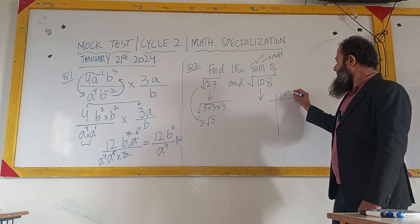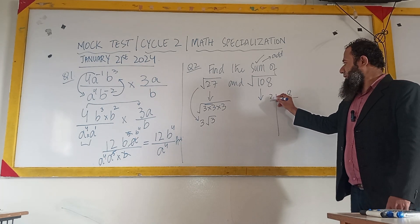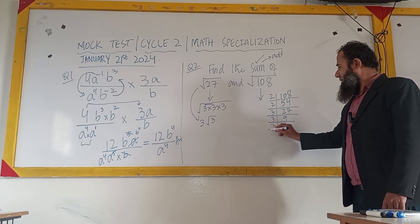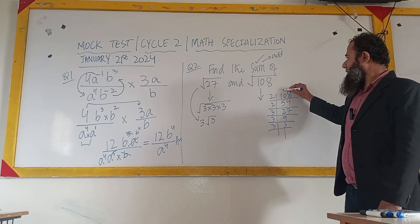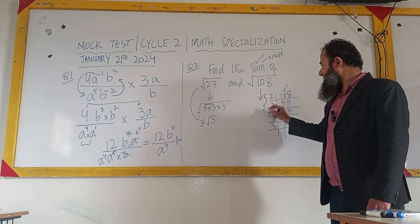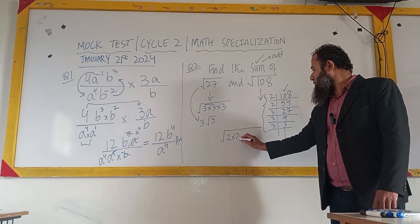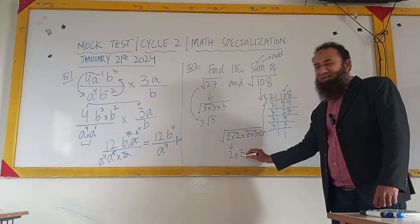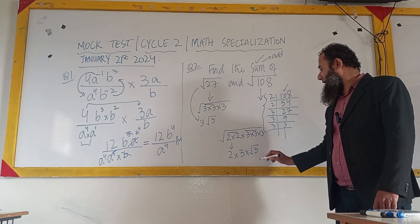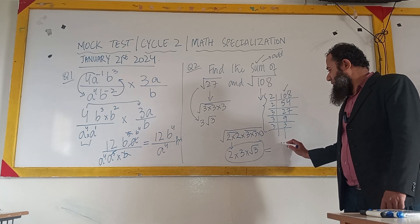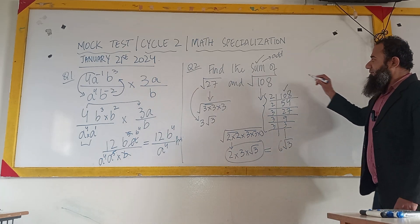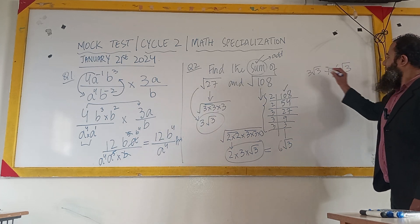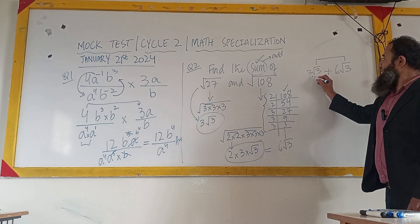We do the same for 108 using prime factorization: 2 times 2 times 3 times 3 times 3. Written in radical form this is 2 times 2 times 3 times 3 times 3. The pair of 2s comes out of the square root, the pair of 3s comes out, and one 3 remains under the square root, giving 6√3. Now we add 3√3 and 6√3. Since they have the same radical form, we just add the coefficients.